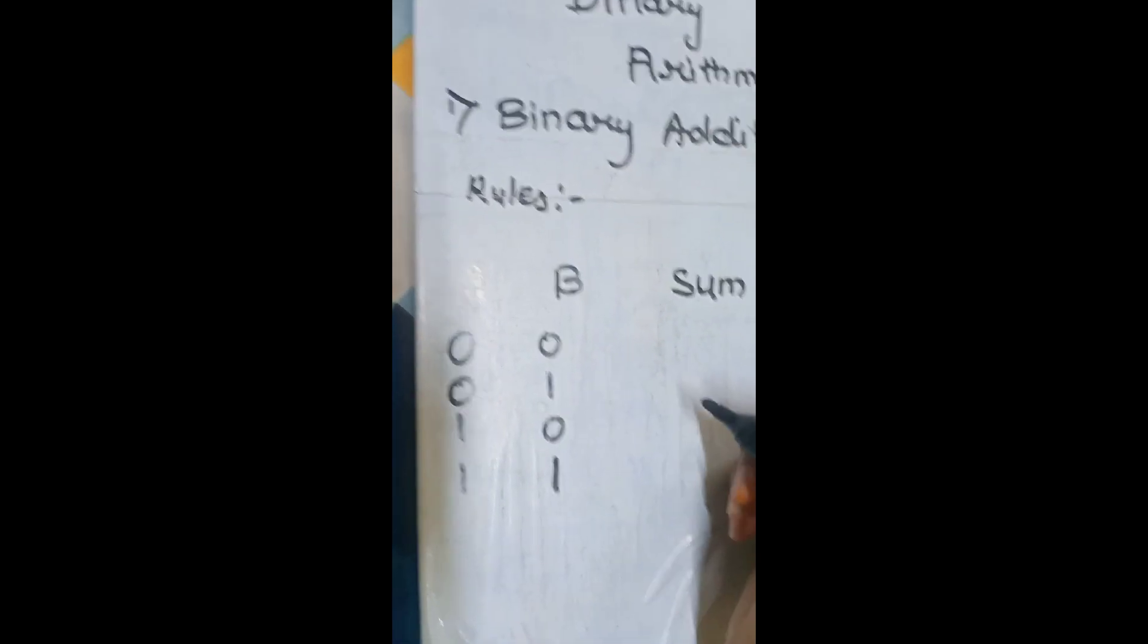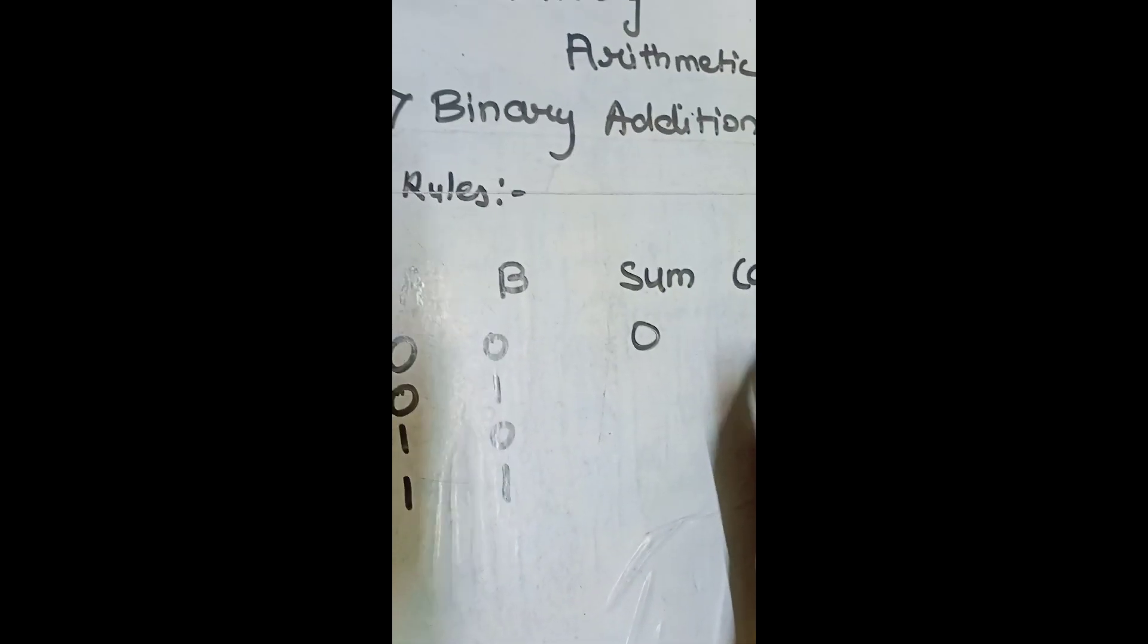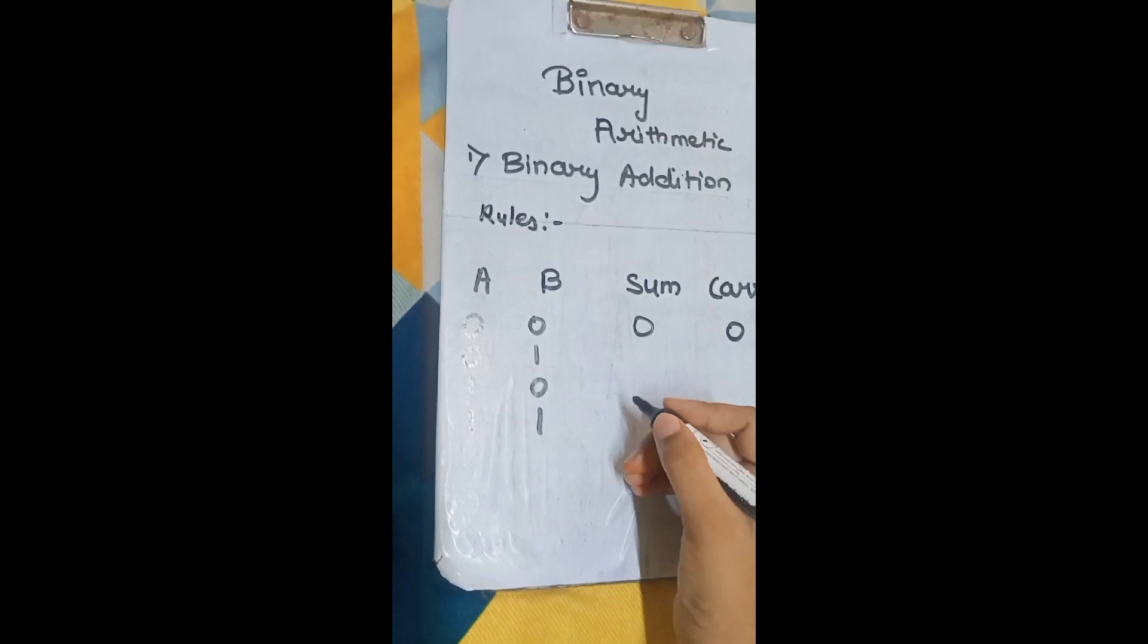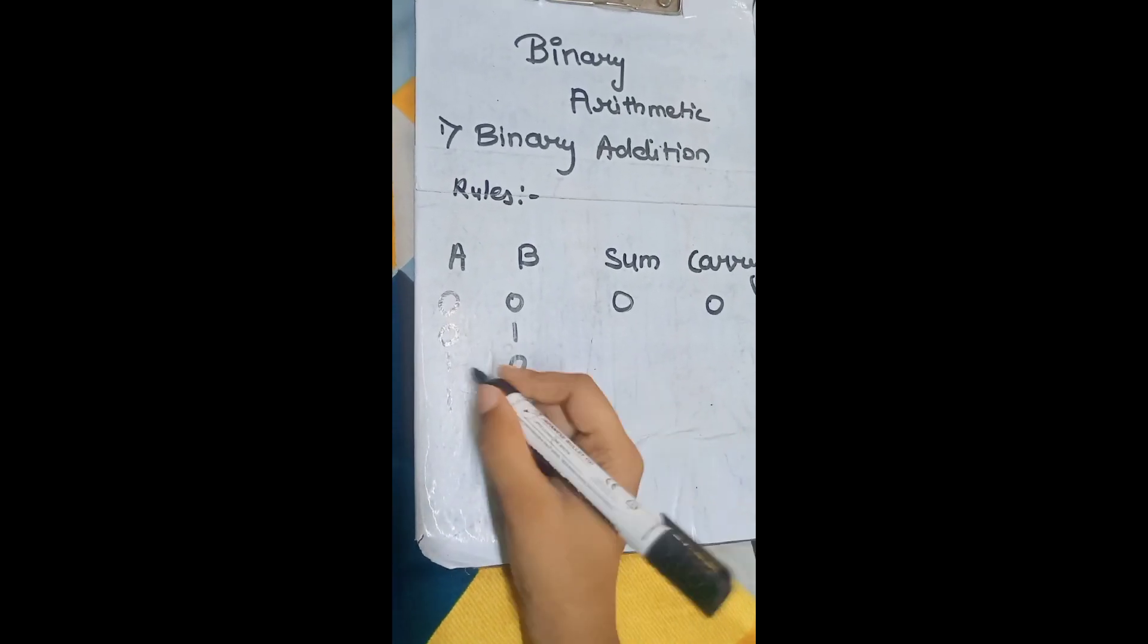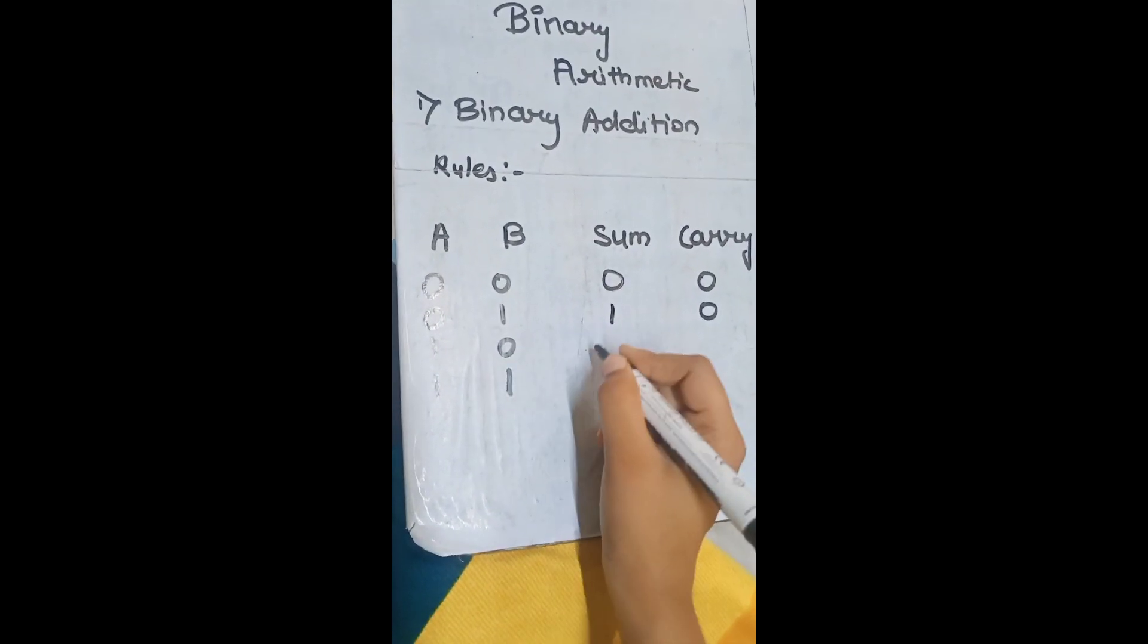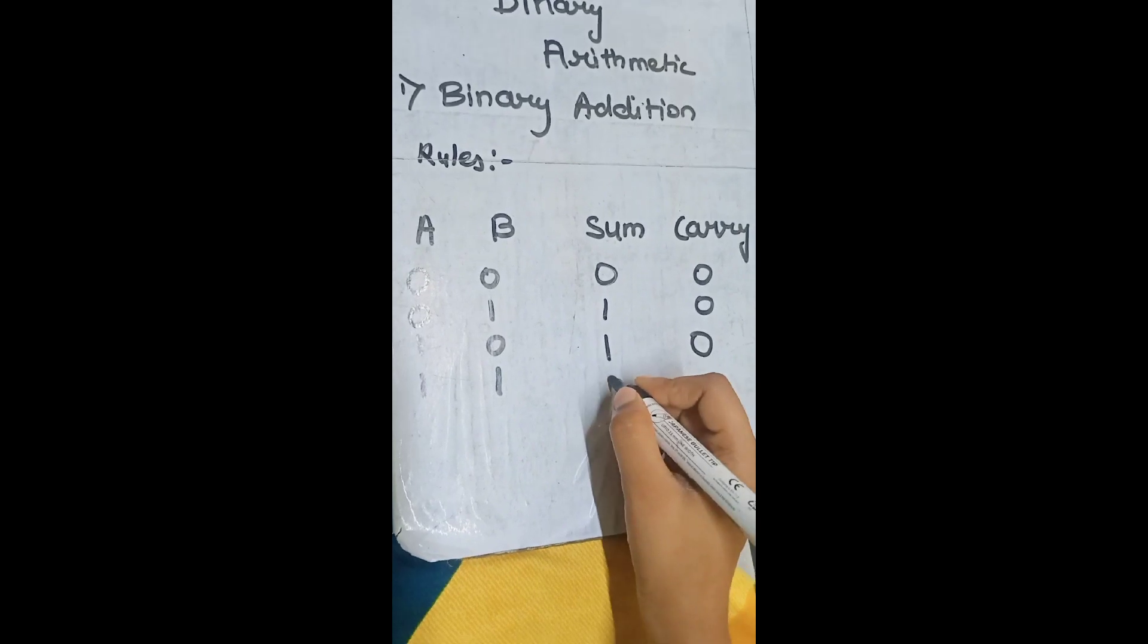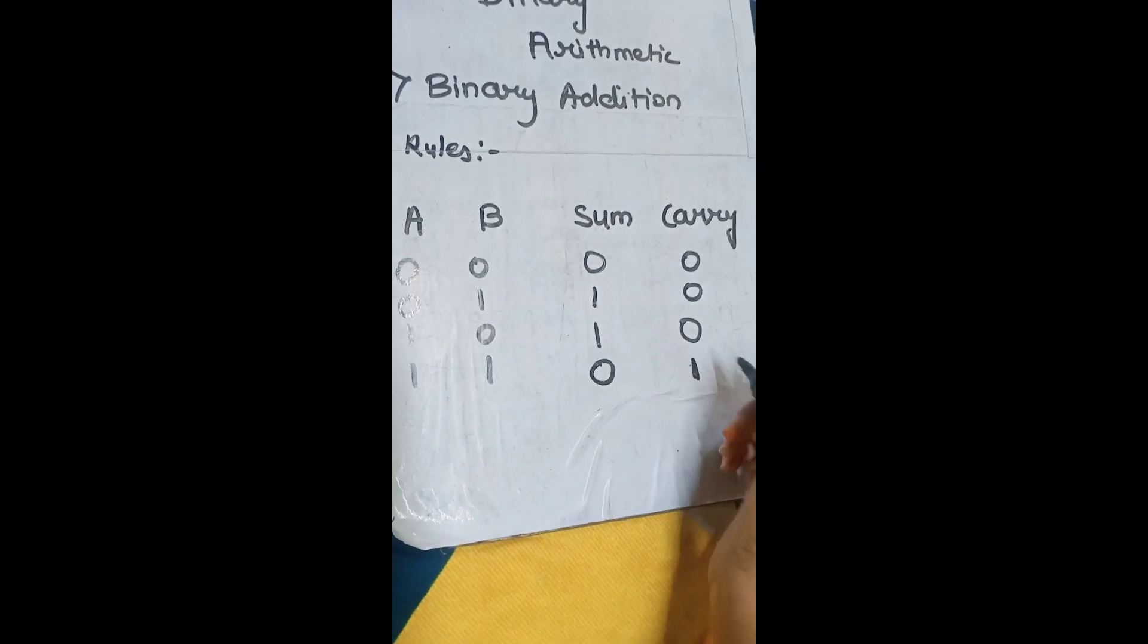The sum of 0 and 0 is 0, carry is also 0. The sum of 0 and 1 is 1, carry is 0. Sum of 1 and 0 is 1, carry is 0. So, sum of 1 and 1 is 0 and carry is 1.